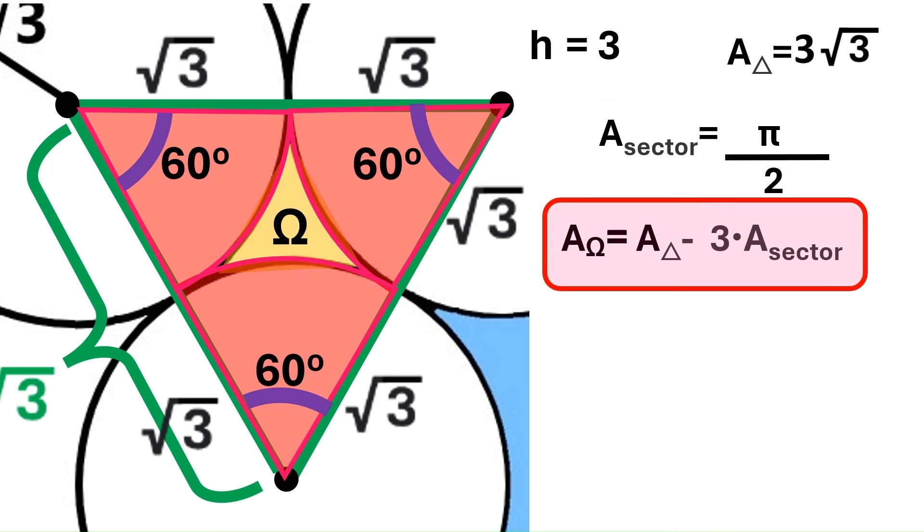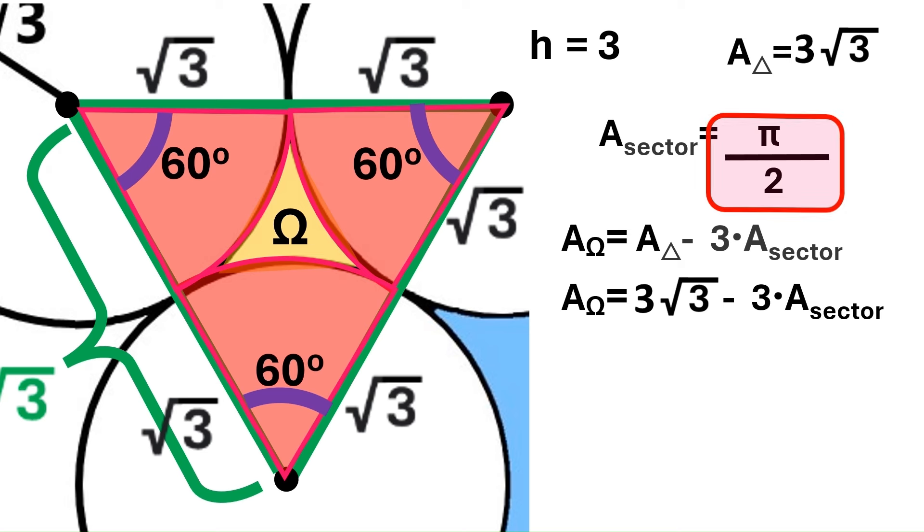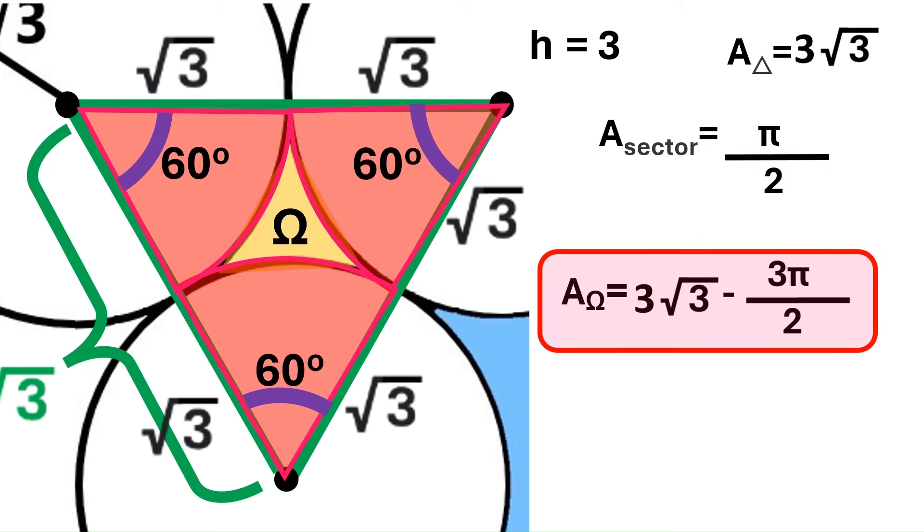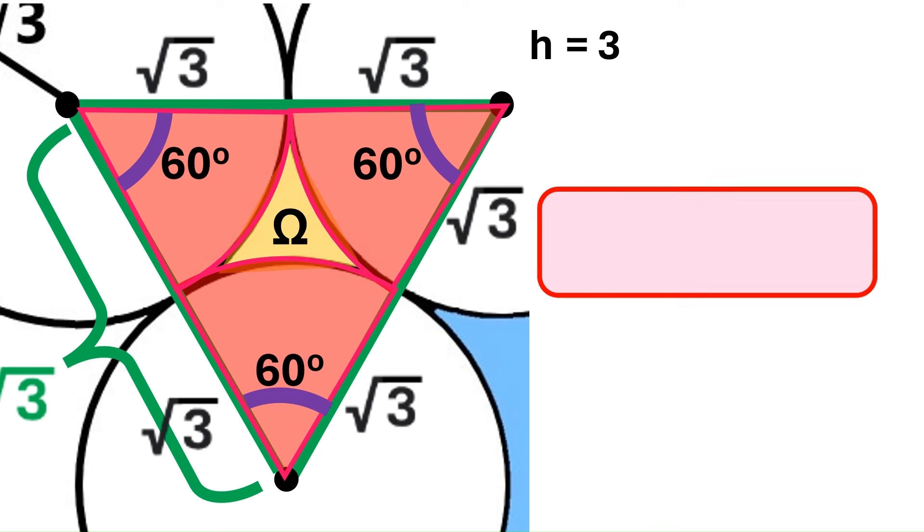I said earlier that the area omega equals the triangle's area minus the three sectors. This is the triangle's area, so let's put it here. And this is the area of one sector, so let's put that here too. The area omega turns out to be 3 times radical 3 minus pi over 2. This information is very important, so let's keep it here.